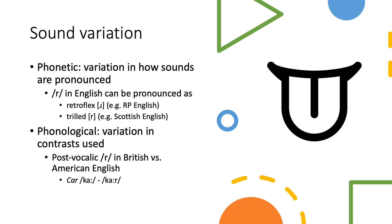First of all, we have variation on the level of sounds. This could be simply a difference in how sounds are pronounced, such as the phoneme R in English can be pronounced as the retroflex R, like in some dialects of English, including received pronunciation. But in other dialects of English, the R can actually be trilled and pronounced as R — that is the case, for example, in Scottish English.